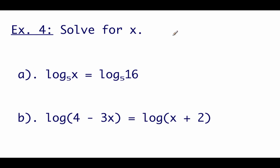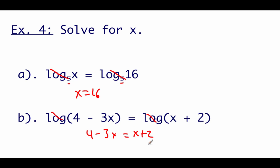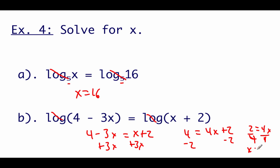Last thing we're doing is solving some logarithmic equations using the 1-to-1 property. First example: log base 5 of x equals log base 5 of 16. Same base, so we ignore the logarithms and get x equals 16. Next one has an implied base 10: log of (4 minus 3x) equals log of (x plus 2). Ignoring the logarithms gives us 4 minus 3x equals x plus 2. Adding 3x gives 4 equals 4x plus 2, subtracting 2 gives 2 equals 4x, so x equals 1/2.